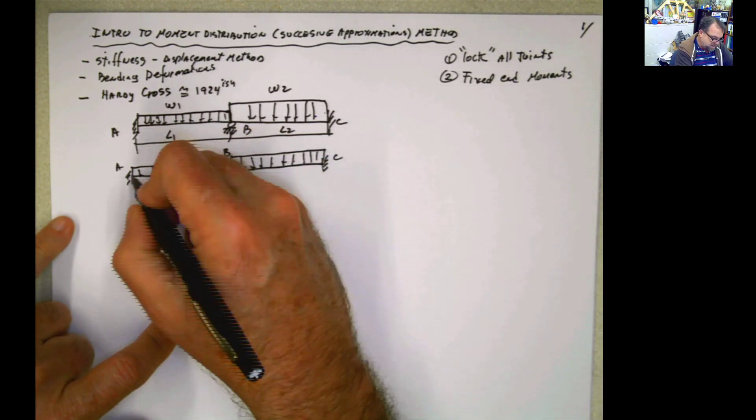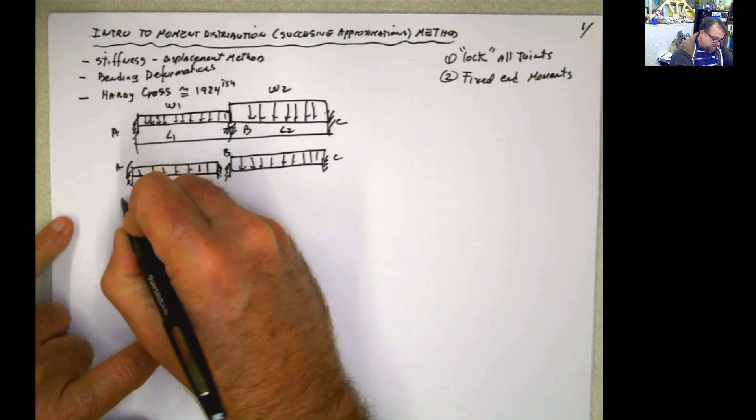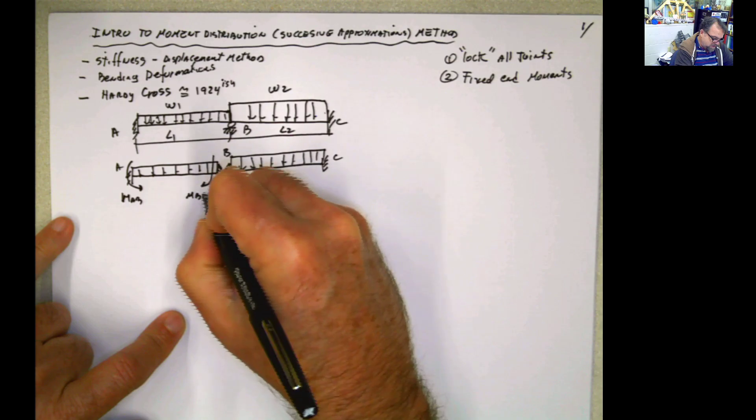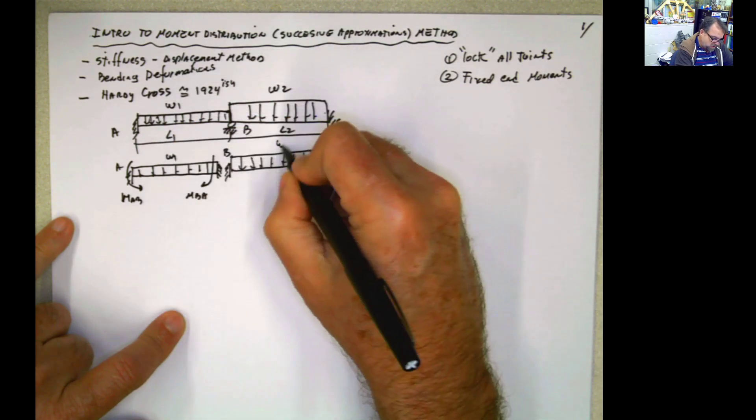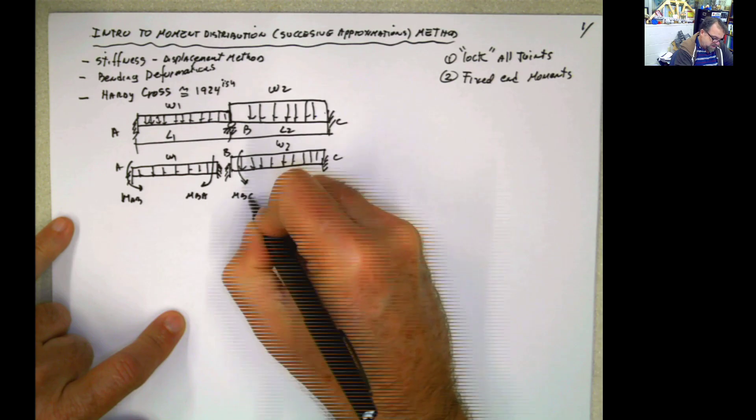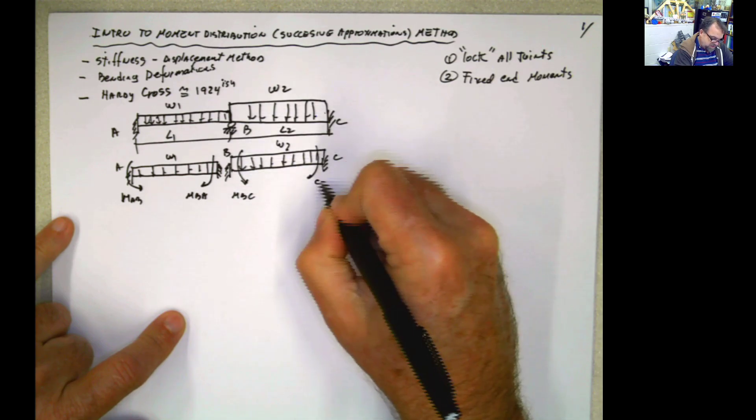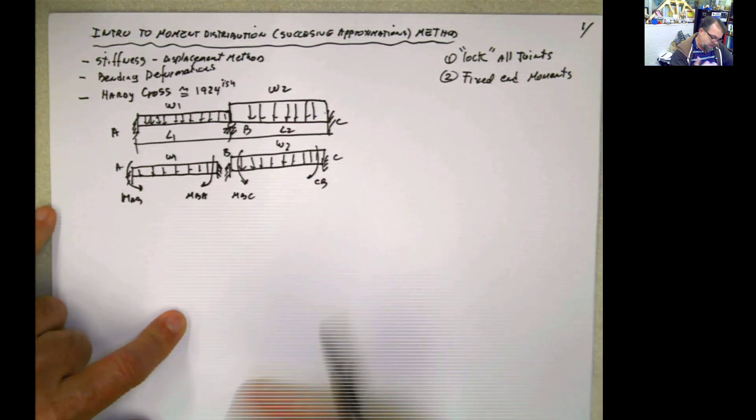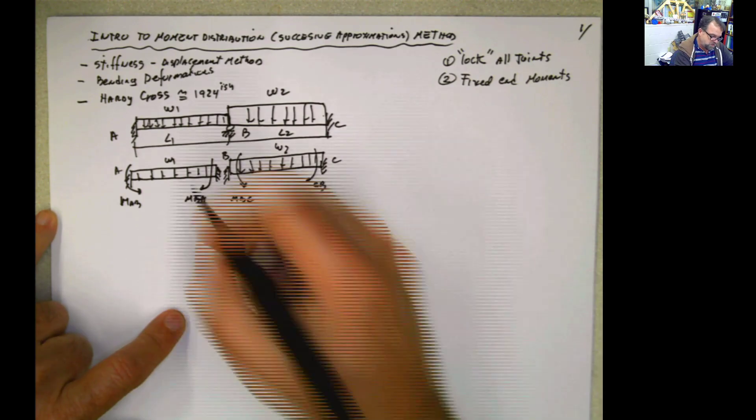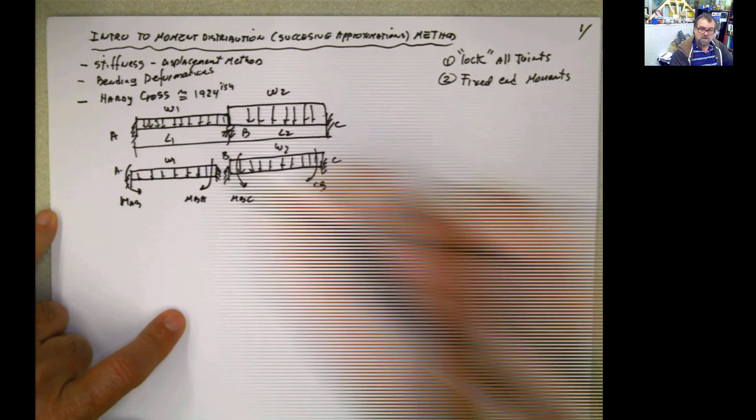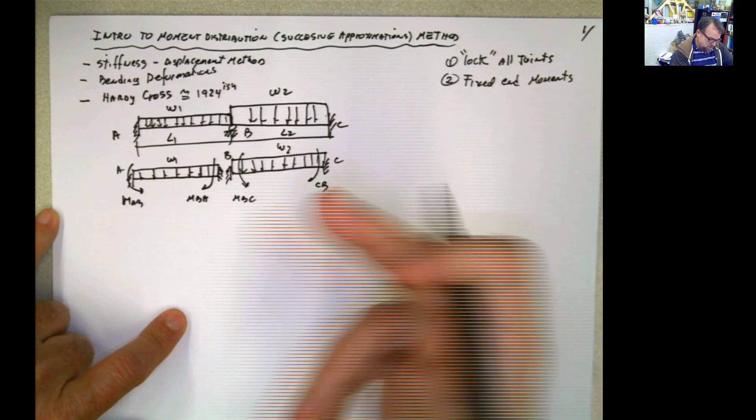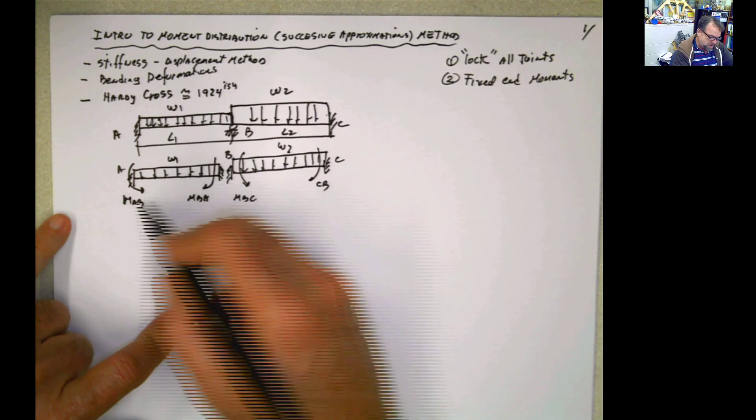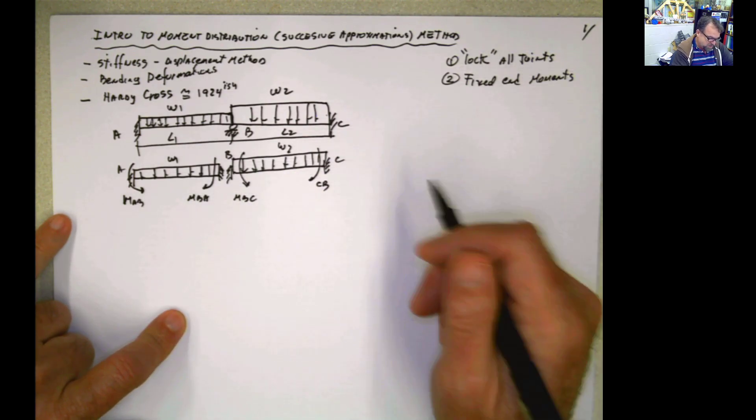So I can go and calculate the fixed end moments, which as the name says, is imagining that every one of these joints is fixed or is locked. That's why you have the lock method. If you have that, well, this is really easy, because you know you're going to have here the moment AB, and this is going to be the moment BA. And this is going to be the moment BC. And this is going to be the moment CB. For this case, that moment, you can find it in the back of the books. This is WL squared divided by 12 for this case.